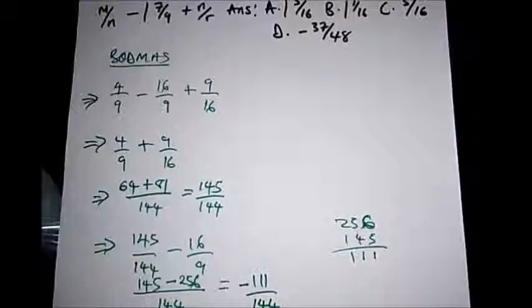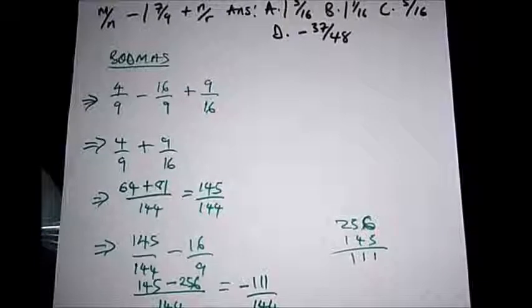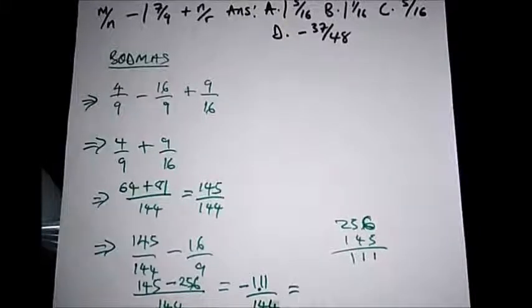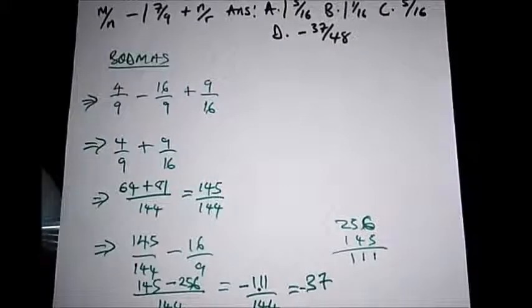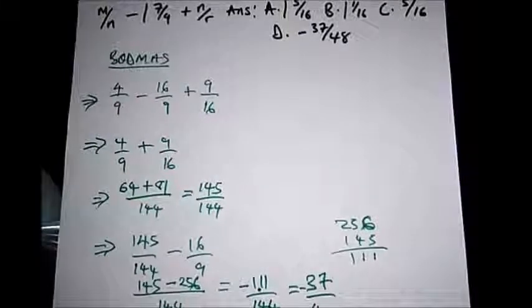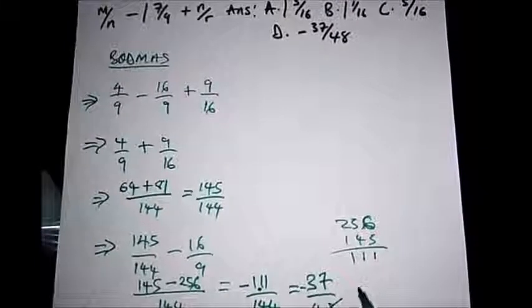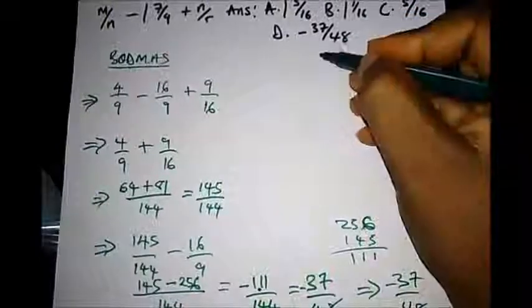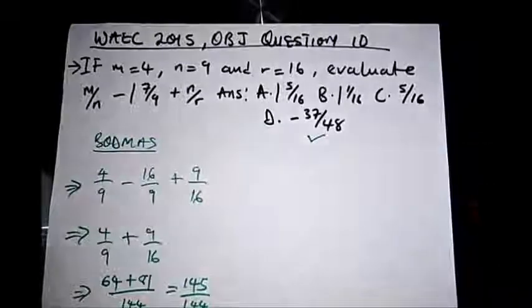Can we simplify negative 111 over 144 further? Yes — 3 can go into both. 3 goes into 111: 3 times 37 is 111. 3 goes into 144: 3 times 48 is 144. So we finally have negative 37 over 48, and this is our correct answer.